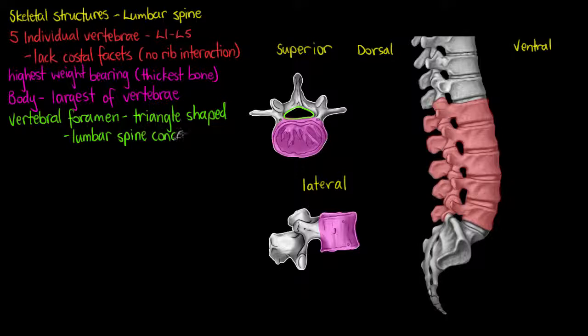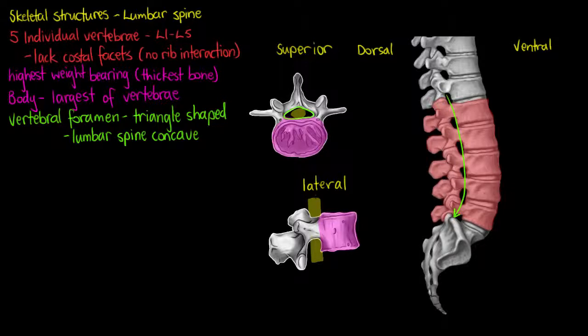Due to the curvature of our spine — cervical concave, thoracic convex, and then lumbar concave again as I've just outlined here — the foramen takes on that triangular shape. One more important thing to note is that the reason we have this vertebral foramen is so that we can pass our spinal cord through that space, as I've just drawn up on the screen here in yellow.